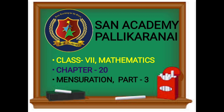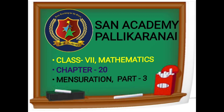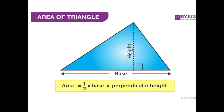Here we will look at the area of triangles. A triangle has three sides and three angles — that is what makes it a triangle. In this lesson, we are going to see four formulas in total. The first formula is the area of a triangle.